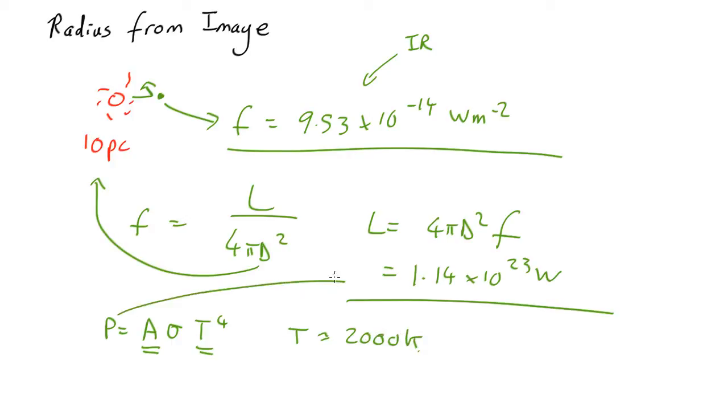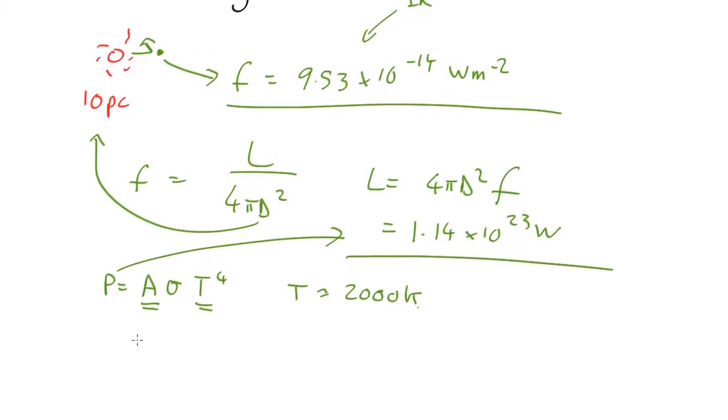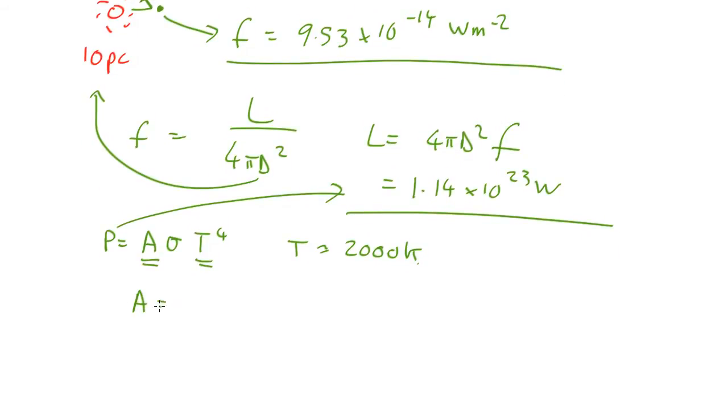The power here is the luminosity. So we get that the area equals the luminosity over sigma, the Stefan-Boltzmann constant, t to the 4th. And the area is equal to the area of a sphere, assuming a spherical planet, so that's 4 pi r squared. So we get that r equals the square root of L over 4 pi sigma t to the 4th.